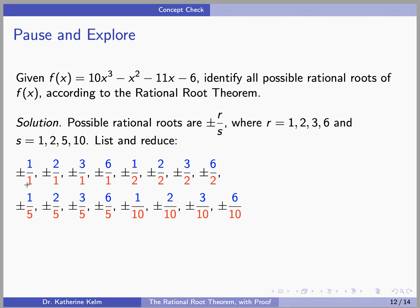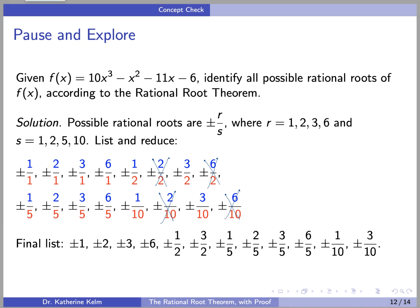We have ±1, ±2, ±3, ±6, ±½, ±3/2, ±1/5, ±2/5, ±3/5, ±6/5, ±1/10, and ±3/10. Note that some fractions like 2/2 = 1 or 2/10 = 1/5 reduce to values already listed. So our final list of possible rational roots is ±1, ±2, ±3, ±6, ±½, ±3/2, ±1/5, ±2/5, ±3/5, ±6/5, ±1/10, and ±3/10.